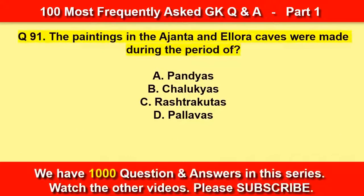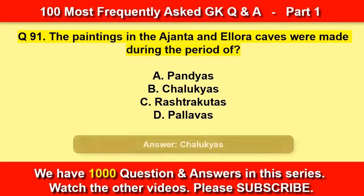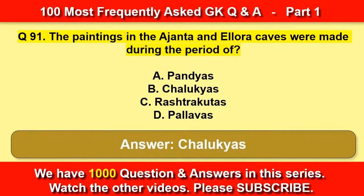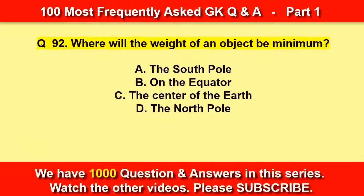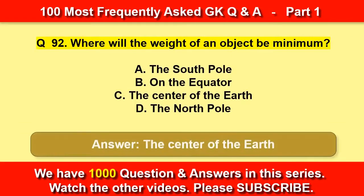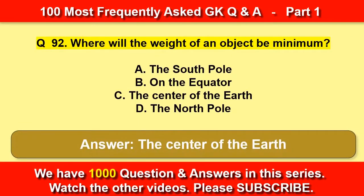The paintings in the Ajanta and Ellora caves were made during the period of — Chalukyas. Where will the weight of an object be minimum? At the centre of the earth.